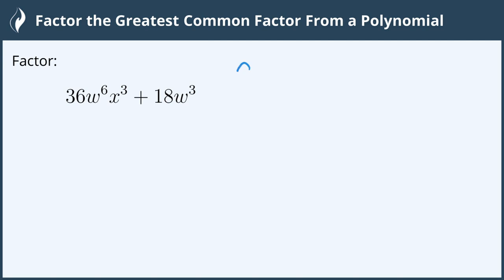The first thing we need to do is find the greatest common factor. The greatest common factor between these two terms is 18, and we'll look at the variables.